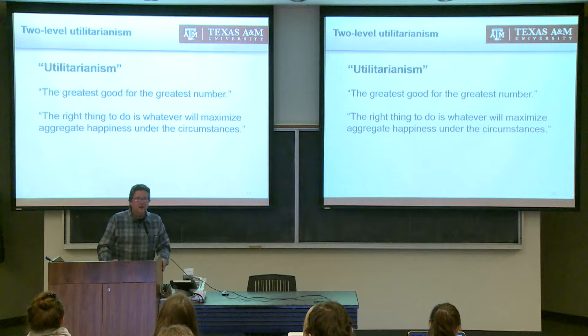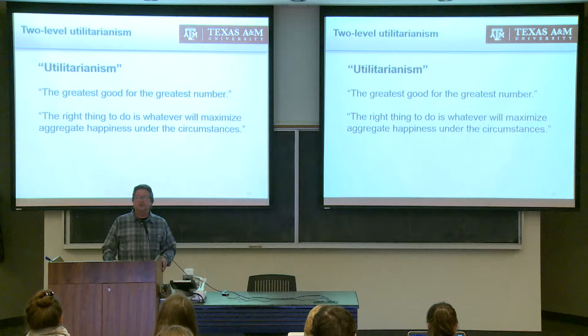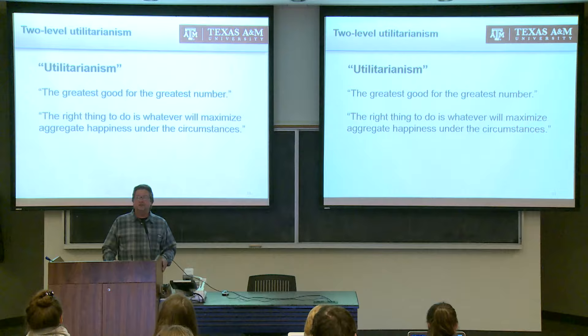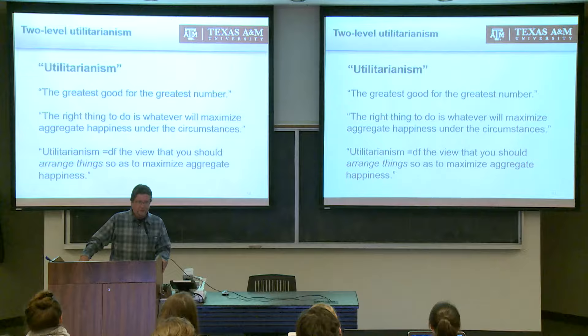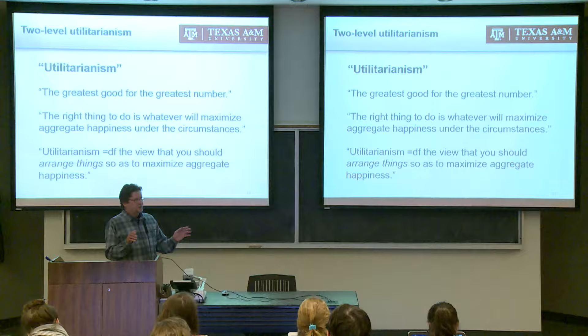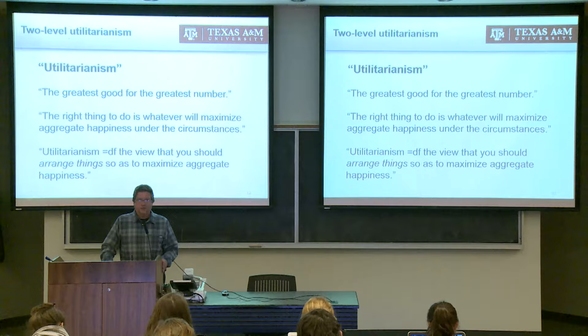They'll say what's right is whatever will maximize aggregate happiness, and that lots of times lying or punishing the innocent might maximize aggregate happiness. There are famous counter-examples to utilitarianism, and the two-level view is designed to address those. I summarize utilitarianism as the view that you should arrange things so as to maximize aggregate happiness. If you're a convinced utilitarian, you actually have good reasons for arranging things so that you don't think like a utilitarian all the time — that's the origin of the two-level view.